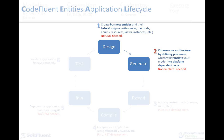Moreover, each generated layer knows how to interact with the other ones. For instance, the object model consumes the database, and if you add the WCF producer, it will produce the contracts, services, and proxies which will allow you to consume the model. If you add the WPF smart client producer, it will generate WPF screens which can use the WCF proxy services, themselves using the .NET object model and the database — all entirely generated by CodeFluent Entities. At this stage, you'll already have 100% functional code which you can compile and use right away.